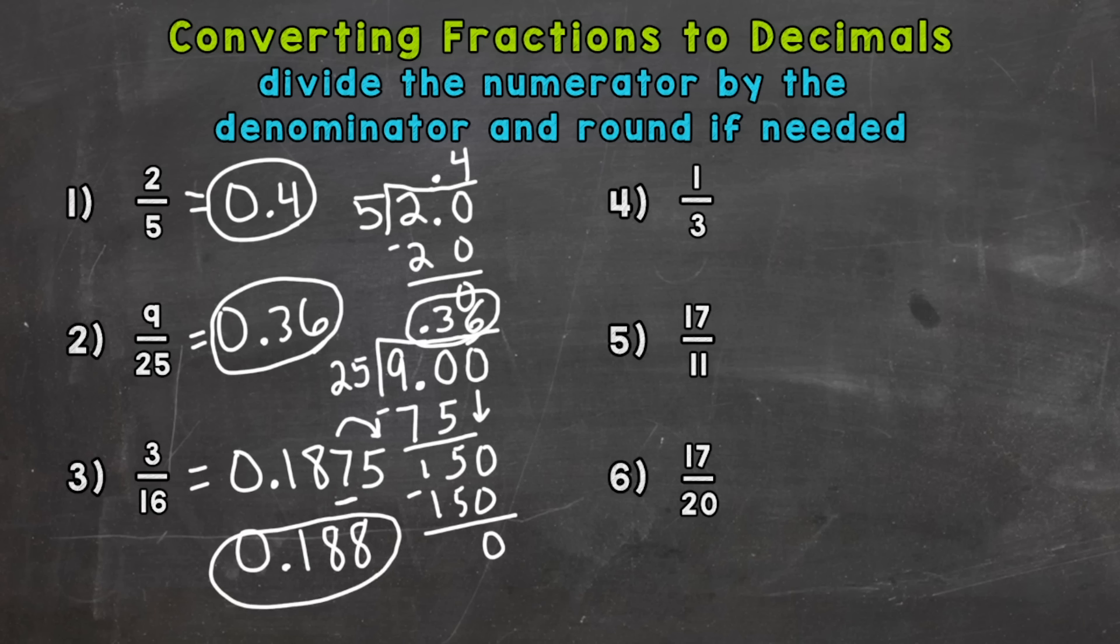So that rounding step depends on what you're doing with the problem. Maybe you wouldn't round that decimal depending on the situation. And as we'll see with number 4 and 5, we can have decimals that are much longer than just to the ten thousandths place.